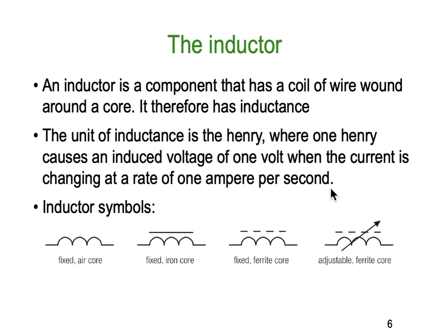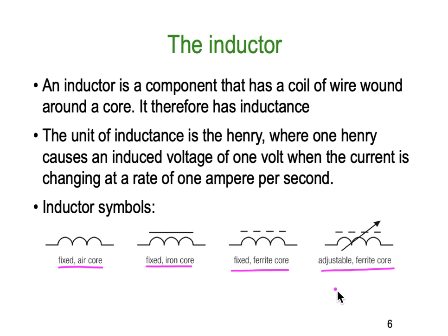We have some symbols for inductance. On the left hand side is what we call a fixed air core — a fixed conductor with air as its core. The next one is a fixed core with iron, represented by a solid line. Similarly, a fixed ferrite core uses a dotted line to represent the ferrite. Finally, there is an adjustable ferrite core inductor — often a small screw of ferrite that you can screw in and out to vary its inductance.